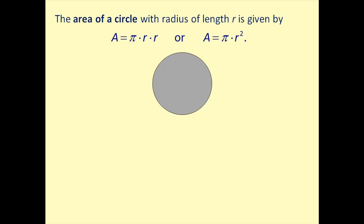The last formula we'll look at is the area of a circle. Notice the area formula involves the radius, so if you have the diameter, you need to divide by 2 to find the radius. Area equals pi times radius times radius, which can be written as pi r squared. To find the area of this circle, we first identify the radius — since the given measurement is the diameter, the radius is half of that, or 5 feet.